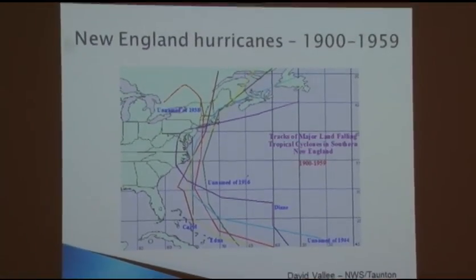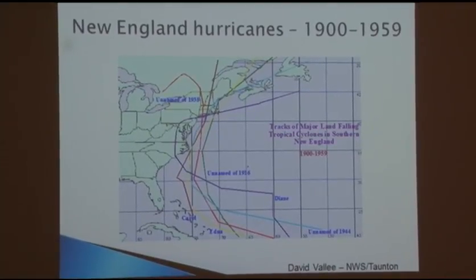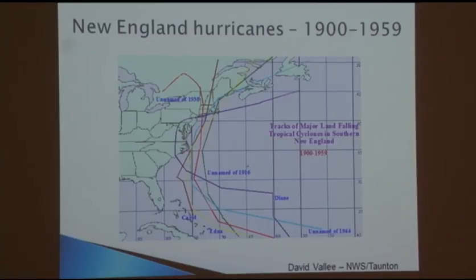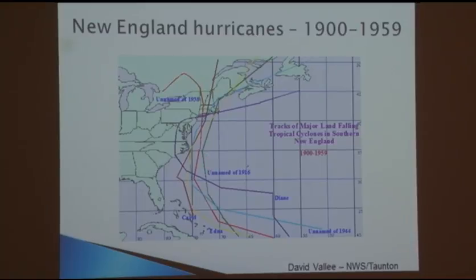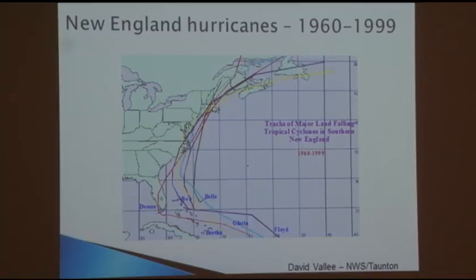My colleague David Valley at the National Weather Service in Taunton, Massachusetts put together figures showing the range and tracks of hurricanes that have hit southern New England in the last century, broken into the first and second halves. In the first part of the century, hurricanes made nearly a 90-degree direct hit on the New England coastline. In the second half of the 1900s, it was more of a glancing blow, which has implications for whether people living in northern New England had experience and knowledge of direct hurricane impacts.